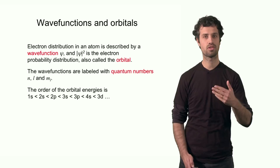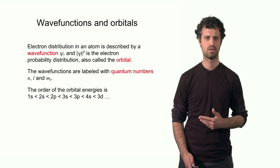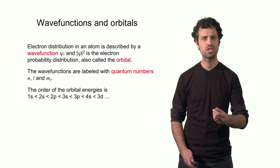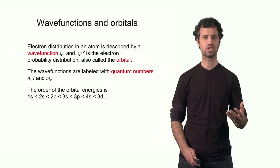The electron can only occupy one of these orbitals. That means the energetic state of the electron is defined by the energy of the orbital, and the electron cannot have any arbitrary energy. The energy of the electron — and thus the entire atom — is quantized. In terms of its energy, the atom is a quantized object.